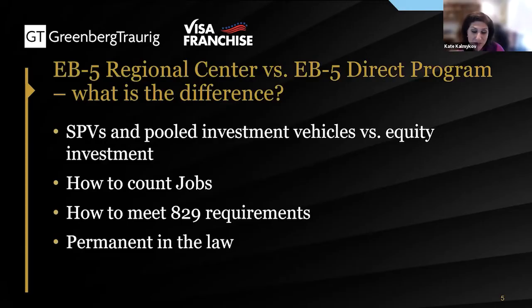The biggest difference between the direct and regional center programs, besides the fact that the regional center program has to continuously be renewed, is the way they calculate jobs. The direct program requires W-2 employees on site, while the regional center program uses an economist model for indirect job creation based on expenditures or revenues of the business. It works for very large scale projects and commercial real estate, but you carry the risk that if the building isn't constructed and the money is not spent, jobs are not created and you may not get the EB-5 in the end.